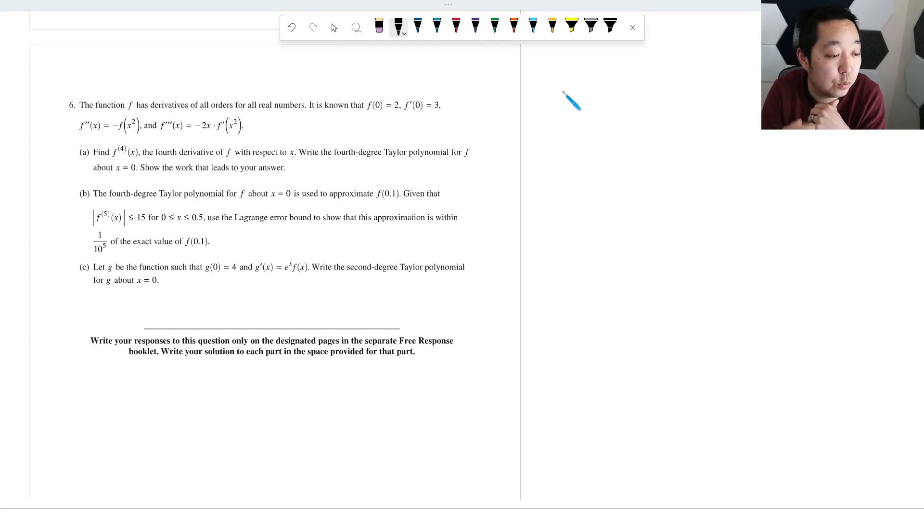The function has derivatives of all orders for real numbers. It is known that f(0)=2, f'(0)=3, and f''(x²)=-f(x²). Find the fourth derivative with respect to x. We're going to take the derivative of this thing. The fourth derivative is just going to be the derivative of this guy right here, so we're going to do product rule.